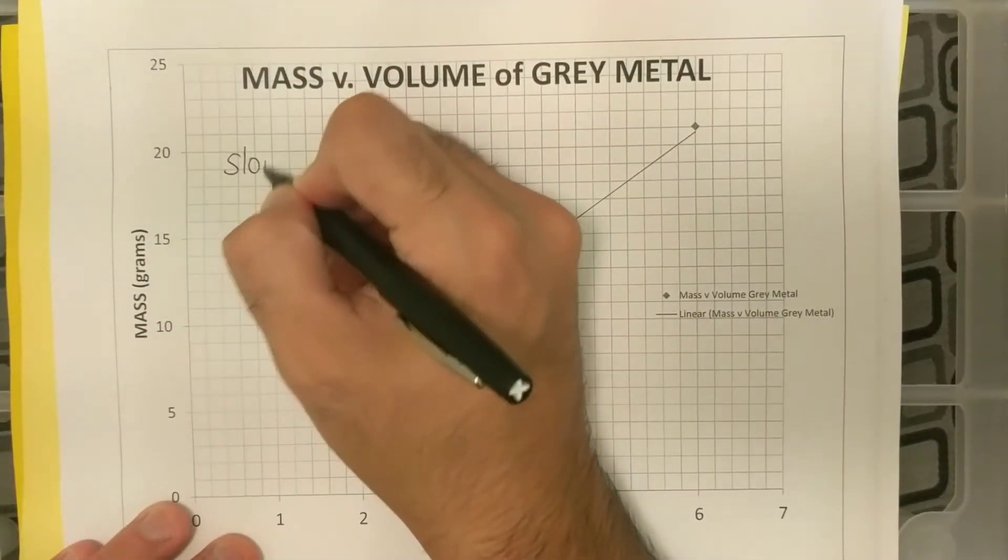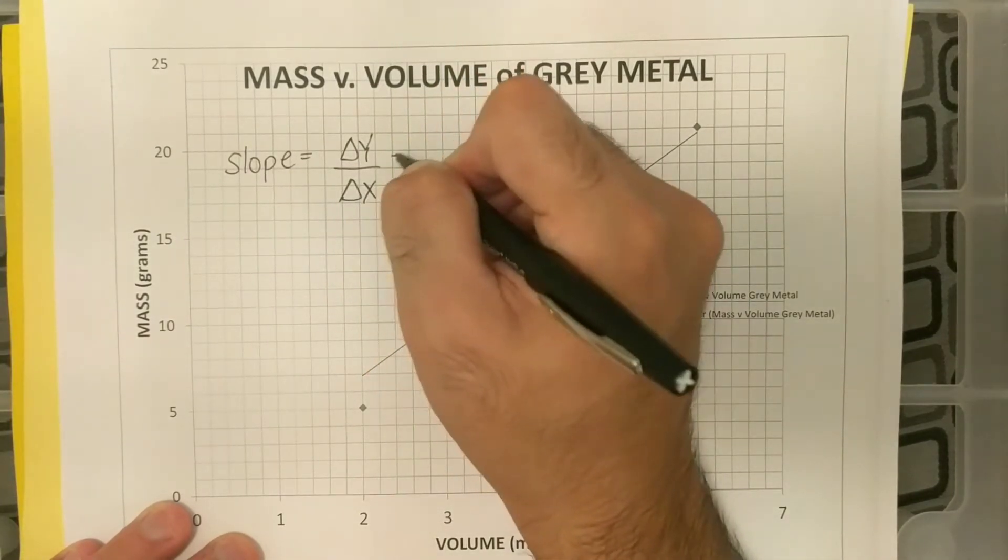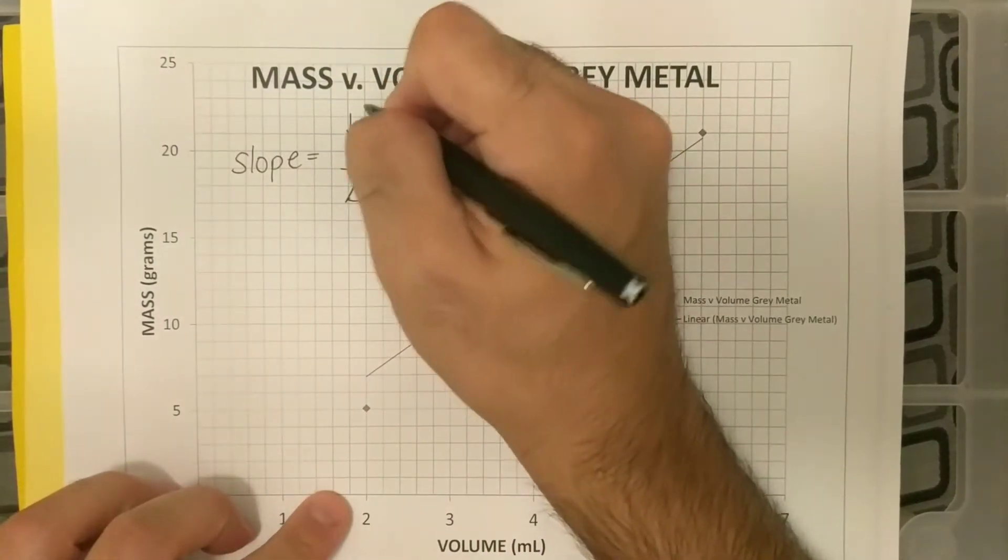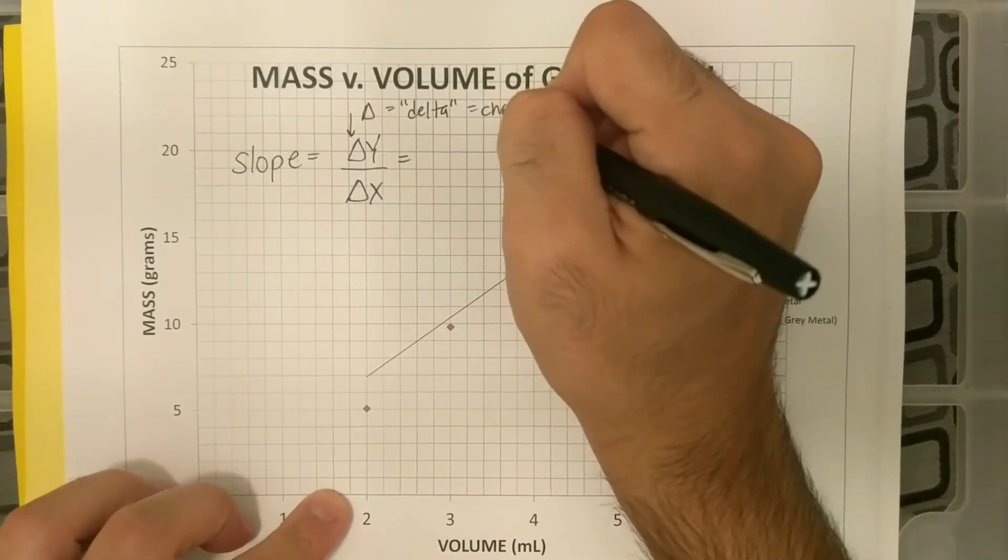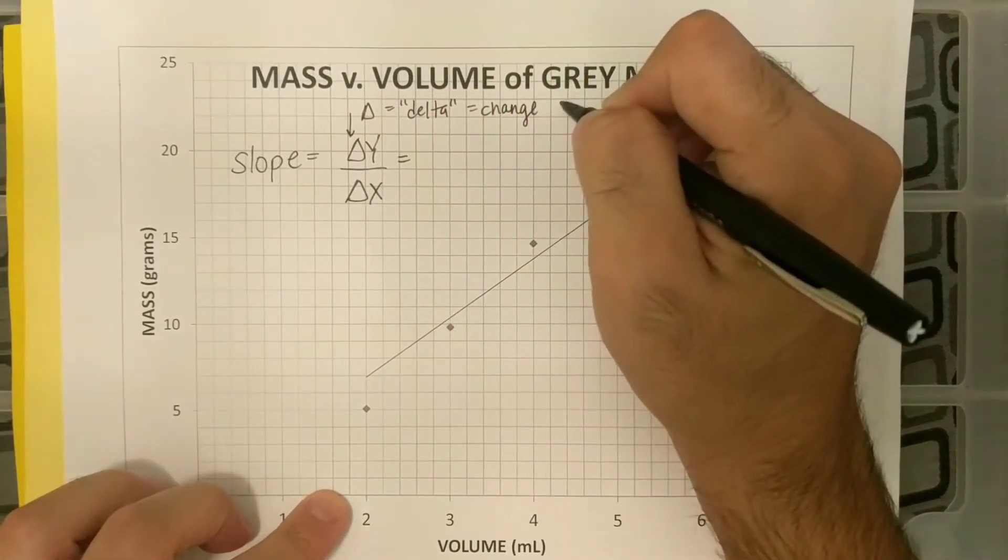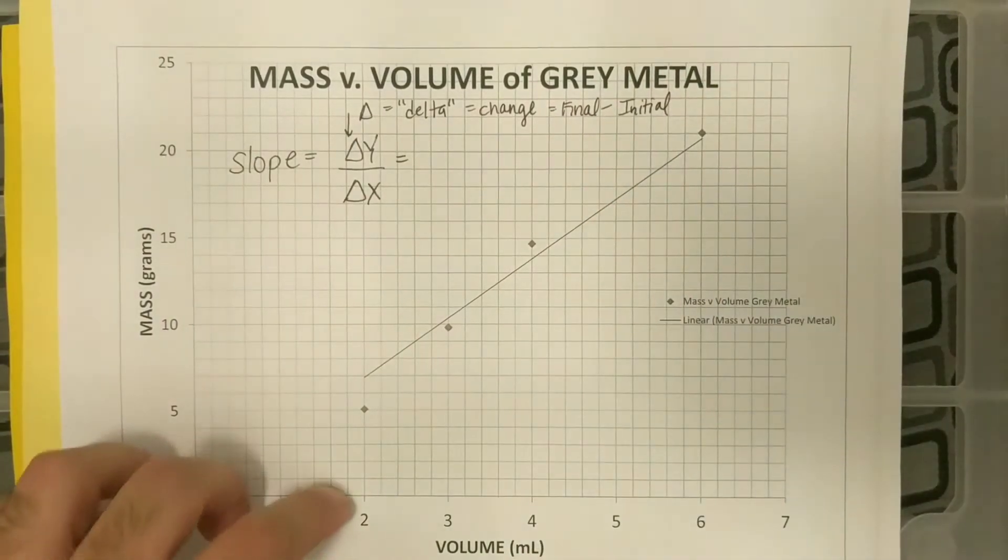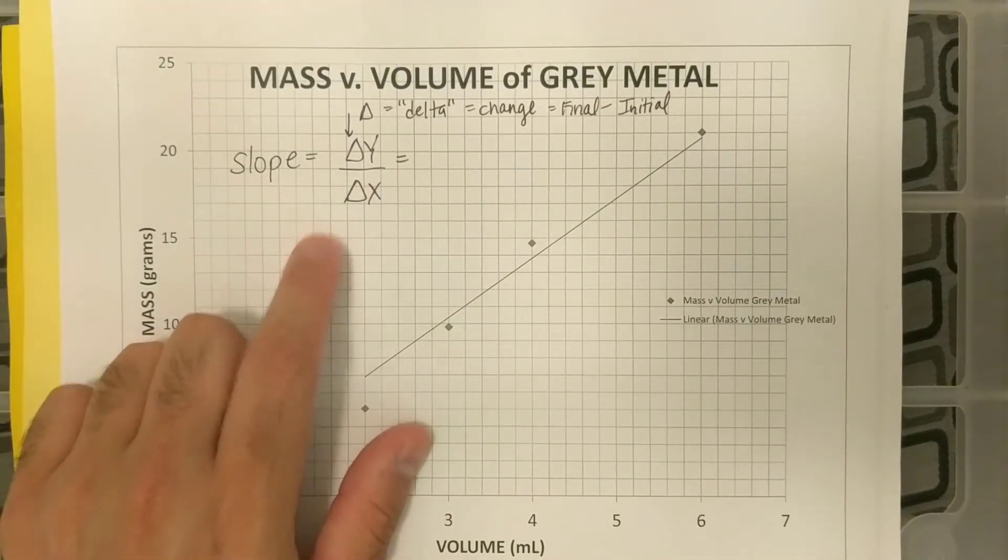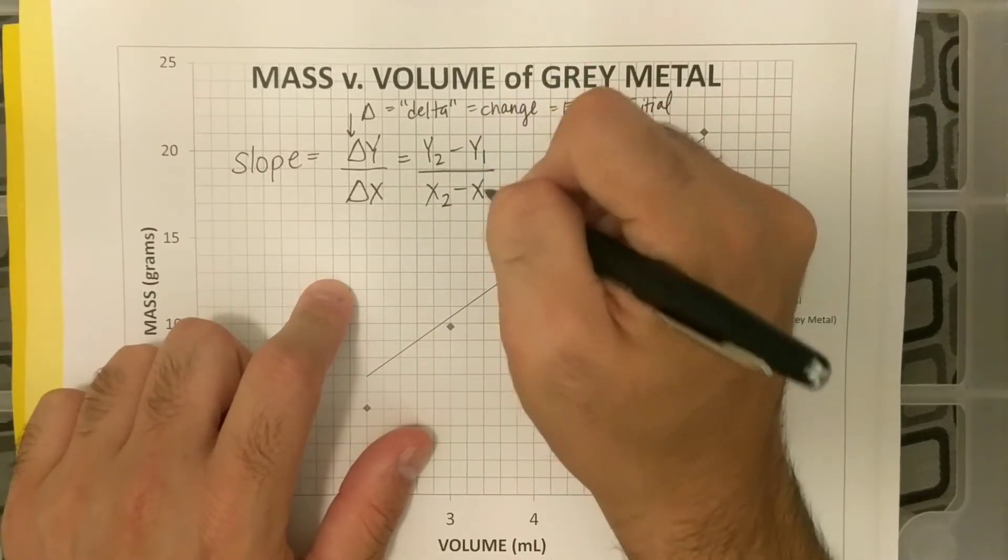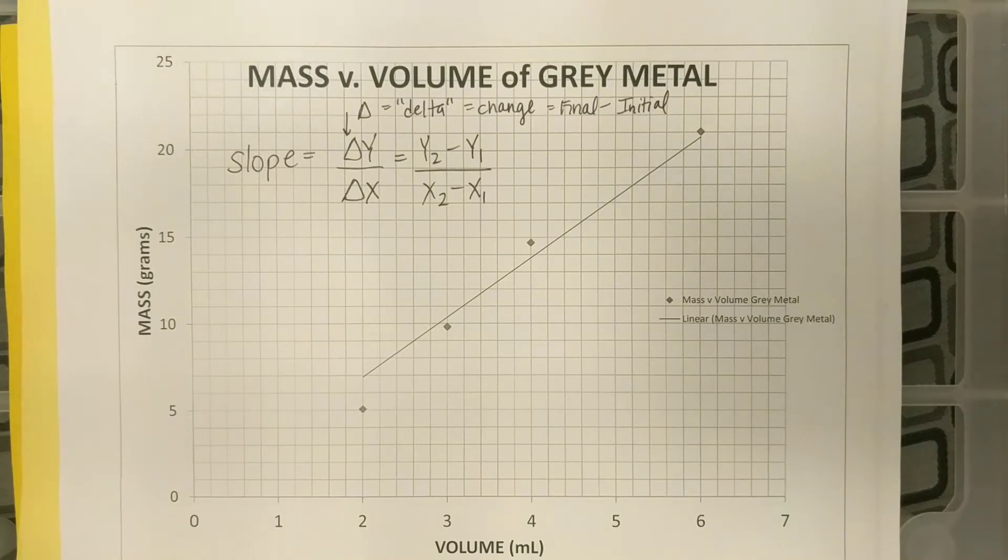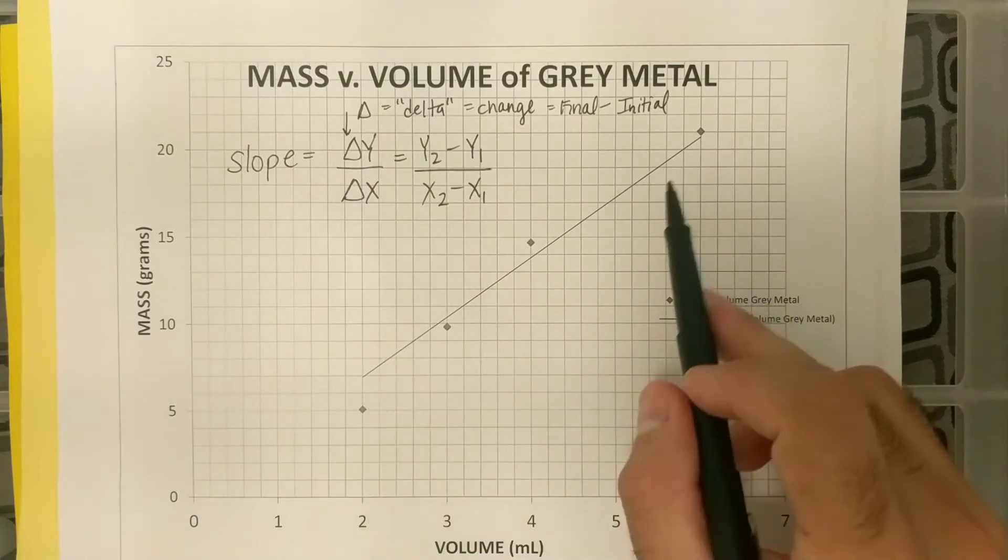Now remember, slope is equal to change in y over change in x, and I use the delta sign. Delta means change. Delta is a Greek letter, and it means change. And it's usually some final minus initial business. Now for y and x having a delta, we're going to say y2 minus y1 over x2 minus x1. We're going to find two sets of data on this graph, and our 2s are going to be higher up than our 1s.